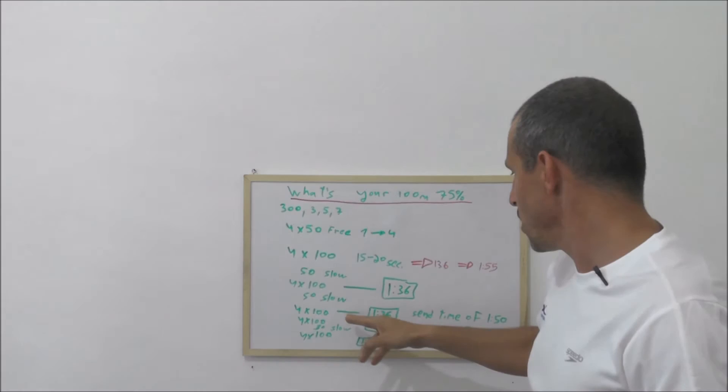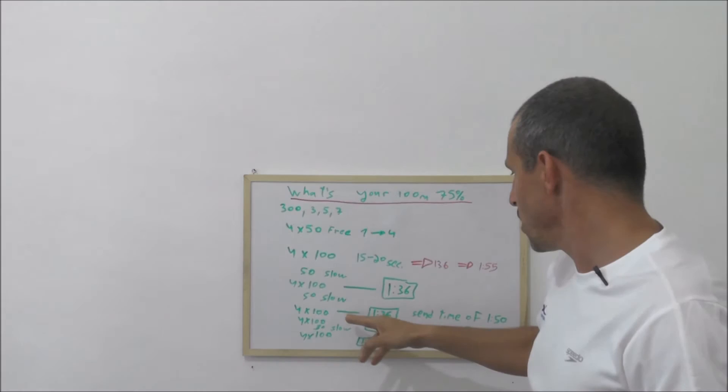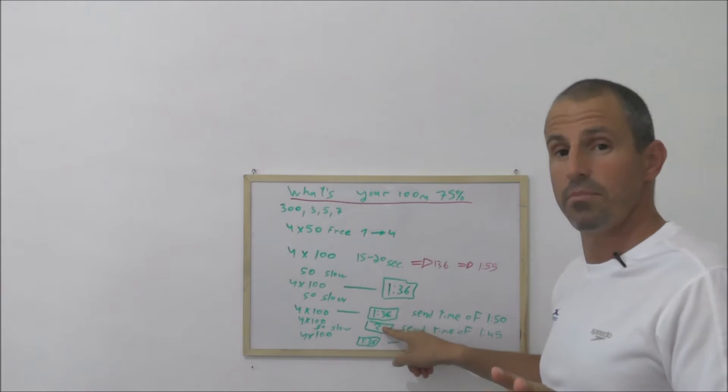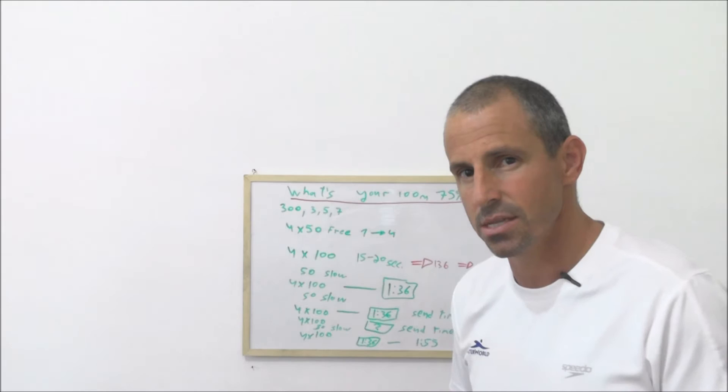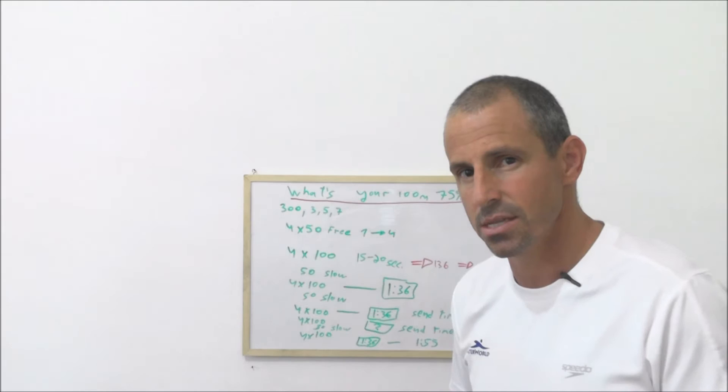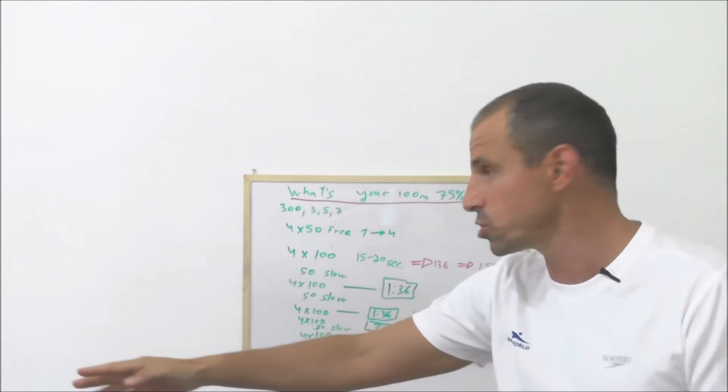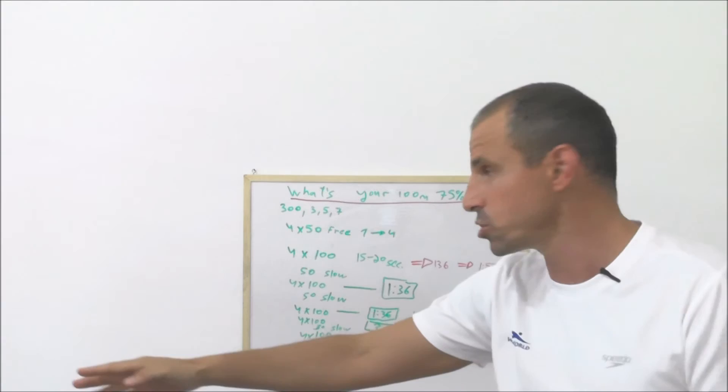Then we're gonna do another 50 slow and another four times 100, but this time your send-off time is 1:45. We don't know what the average pace is gonna be this time, but what I want you to understand is when the send-off time has less seconds to rest, your pulse is gonna be high, but your goal is to control the number of strokes.